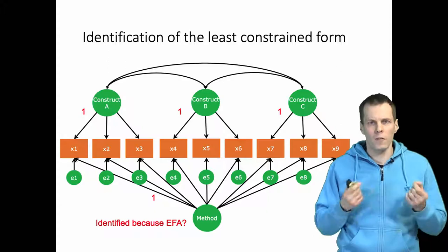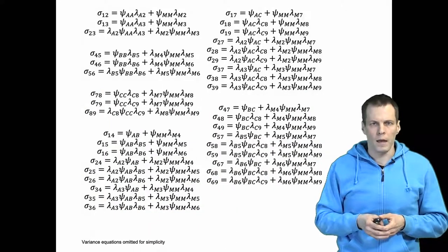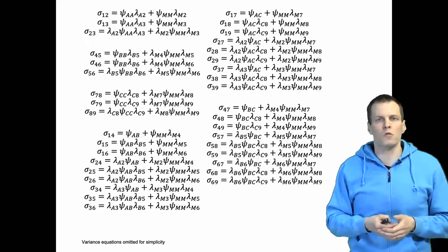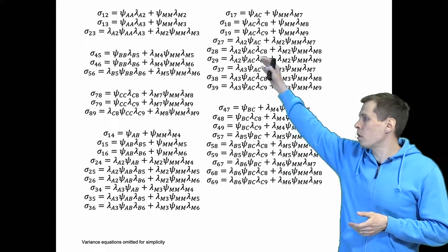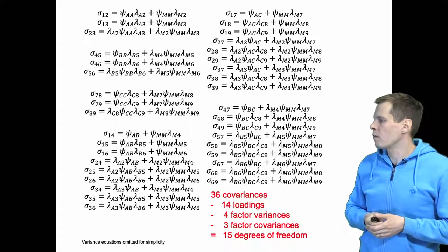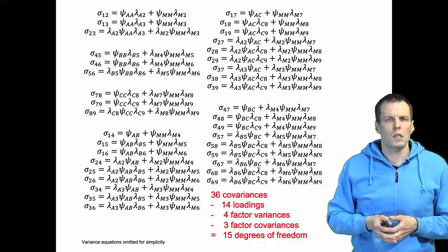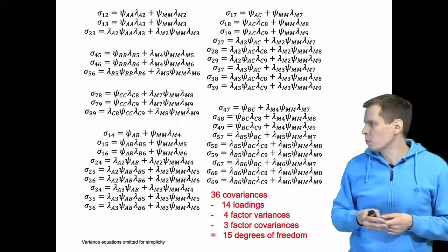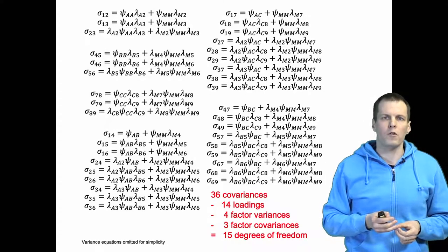Let's take a look at the identification status of this model from a different perspective. Identification can be proven through covariance equations — I've omitted the variance equations for simplicity since they're just used to solve error variances. The question is: can we solve all model parameters from this set of equations assuming we know all the population covariances? We have 36 covariances and 15 degrees of freedom because we have 21 different parameters in the model. We could start solving this set of equations, but it would probably take several days and might be beyond one's skills.